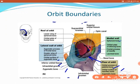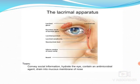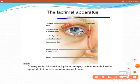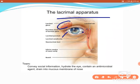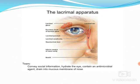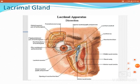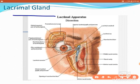The lacrimal apparatus includes the lacrimal gland. Secretions of the lacrimal gland — called lacrimal fluid or tear fluid — lubricate and protect the eyeball. The lacrimal fluid gets drained into the lacrimal puncta, lacrimal canaliculi, lacrimal sac, then into the nasolacrimal duct, and opens into the inferior meatus of the lateral wall of the nasal cavity. The lacrimal gland is located in the superolateral part of the orbit.